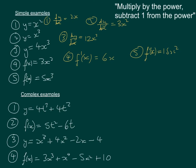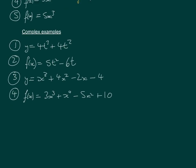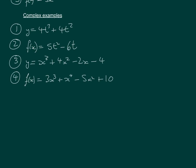Let's move on to the more complex examples, where there's more than one term. So here we've got y equals. So for number 1, we're going to be writing the differential as dy by dx. And for this, you just treat each term separately. So we'll do 3 times 4, which is 12t squared. We've taken 1 from the power.